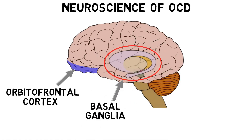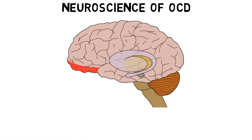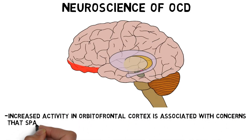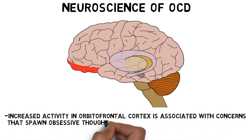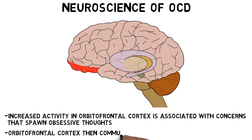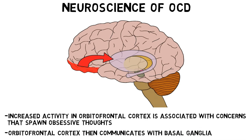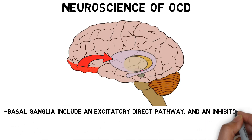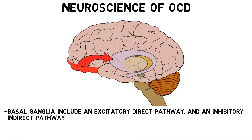According to this perspective, increased activity in the orbitofrontal cortex is associated with a heightened focus on concerns that spawn obsessive thoughts. When the orbitofrontal cortex is activated in response to something the brain perceives as a danger or concern, it communicates with the basal ganglia. A simplified version of basal ganglia circuitry suggests it consists of two opposing pathways: an excitatory pathway called the direct pathway, and an inhibitory pathway called the indirect pathway.